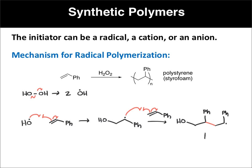We can just show this once more — of course, this will happen hundreds of thousands of times. This radical will add to that pi bond, adding another unit. I'll draw the new bond here in red; now we've added another styrene unit, and that'll continue over and over again. This is called a radical polymerization. This is most common when you have hydrocarbon alkenes, like a phenyl group or maybe a methyl group. We use a radical initiator, and we have a radical intermediate in the mechanism.